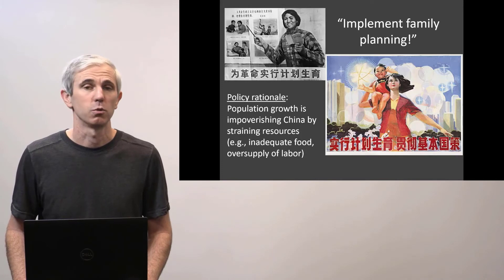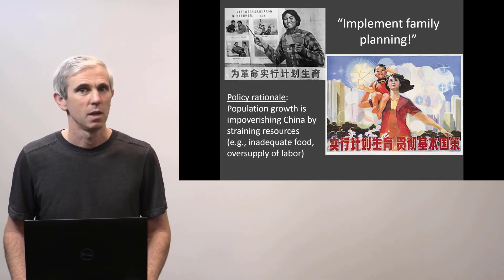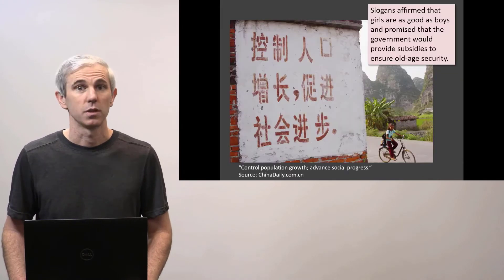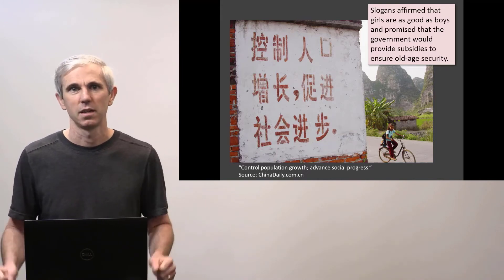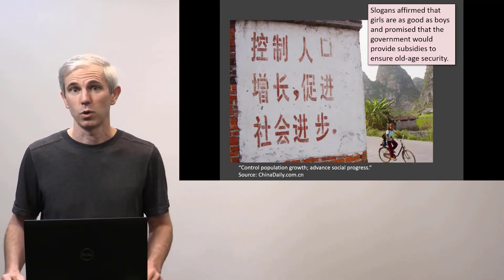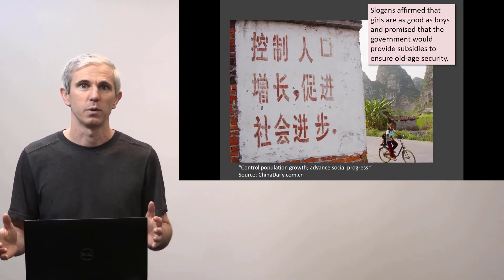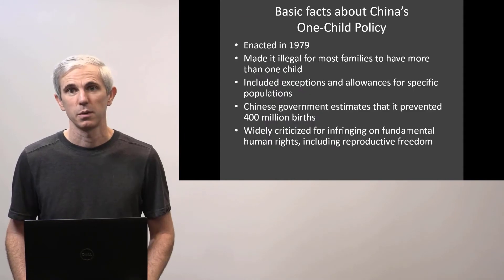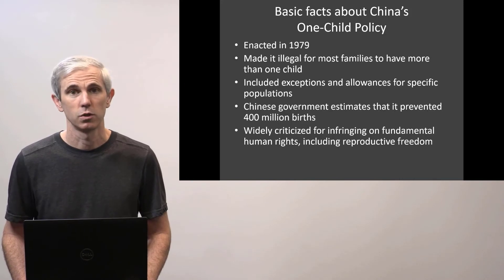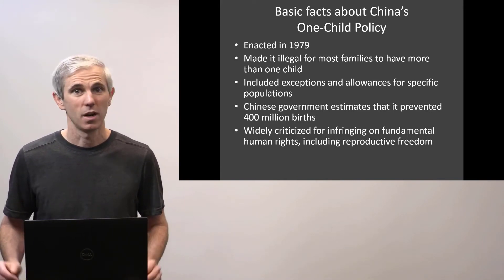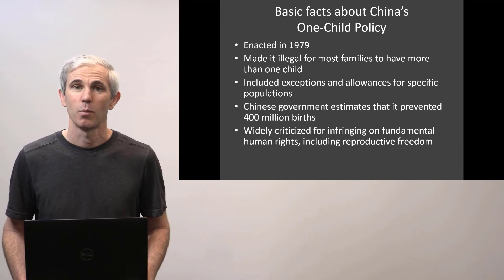The policy rationale was that if China's population grows too fast, this will stress the entire country — people won't have enough to eat, there will be too much competition for resources. The government recognized from early days that there was an ingrained traditional prejudice in favor of boys and against girls, because boys were thought to be more productive and would support you in your old age. The policy stipulated that it would be illegal for most families to have more than one child. There were also punishments for both parents and children — parents would be fined and deprived of certain rights, and children would not be able to attend publicly funded school. The Chinese government has estimated that this policy prevented 400 million births.